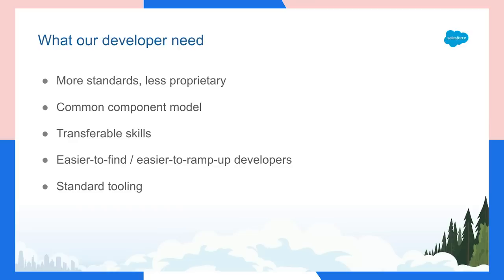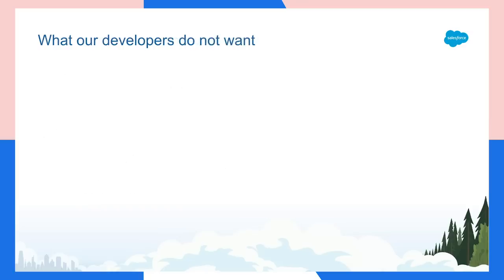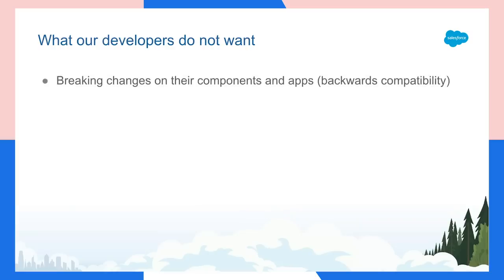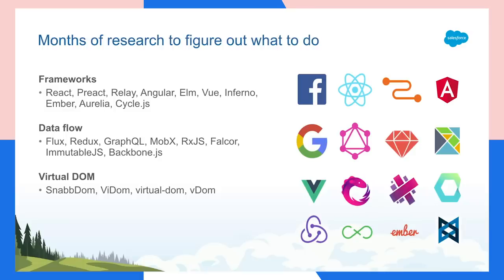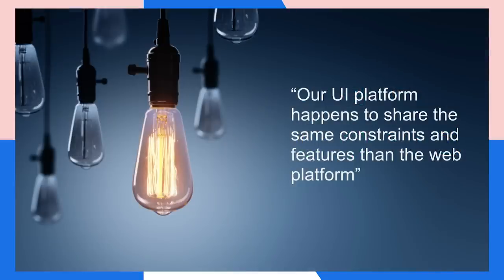They were also very passionate about what they don't want to see in our platform. They don't want to see breaking changes. They want the platform to continue to be backward compatible. They don't want to be stuck on old technologies — in a year from now, they should be able to come back and use new technology. They don't want to be inside a walled garden where the components and customizations they create are only useful inside the Salesforce ecosystem.